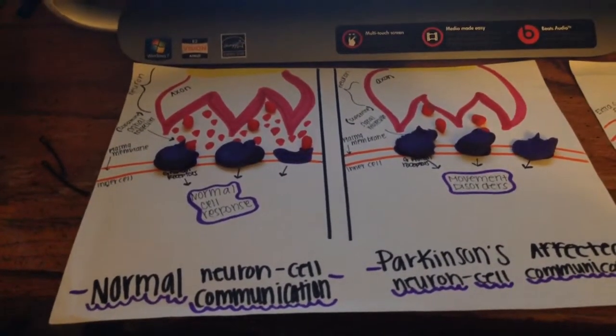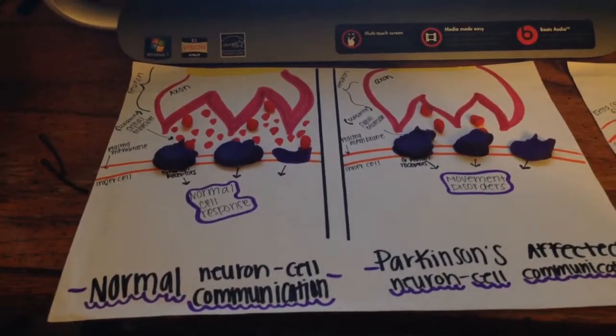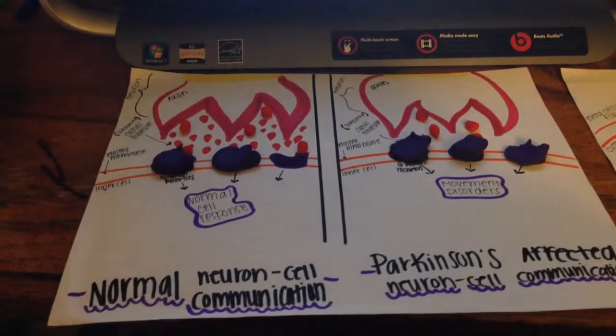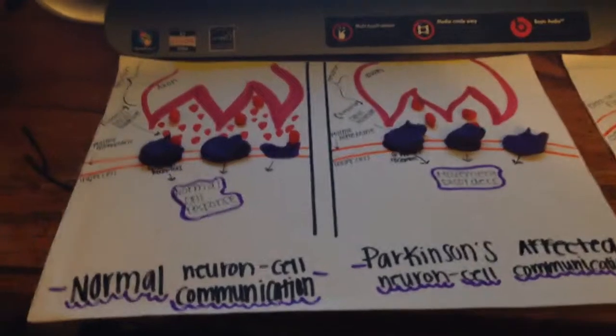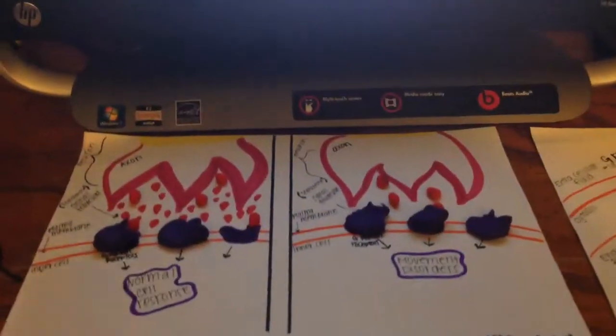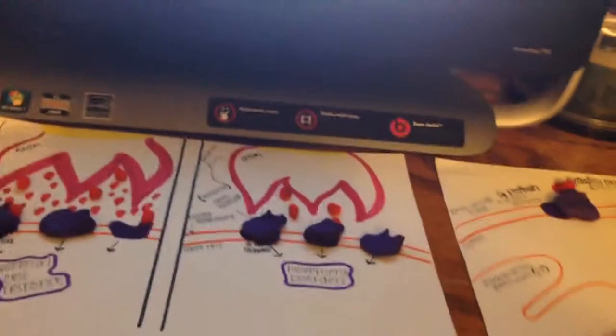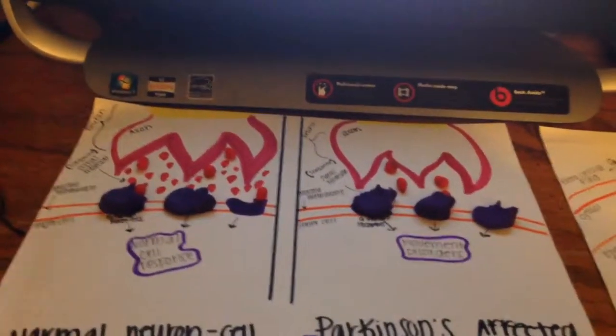Dopamine is a chemical created by nerve cells that sends signals to the part of the brain controlling movement. The signal transduction pathway involved in the dopamine receptor are a class of G-protein coupled receptors that are prominent in the vertebrate central nervous system.